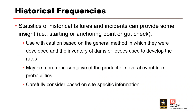Historical rates can provide a starting or anchoring point for probability estimation, or they can be used as a gut check for subjectively estimated probabilities. They must be used with caution to avoid misuse because of the general method in which they were developed and the inventory of dams or levees used to develop the rates. The probabilities may be more representative of several event tree probabilities — like flaw, initiation, continuation, and even progression — as opposed to just initiation, based on when the internal erosion process was observed or detected.